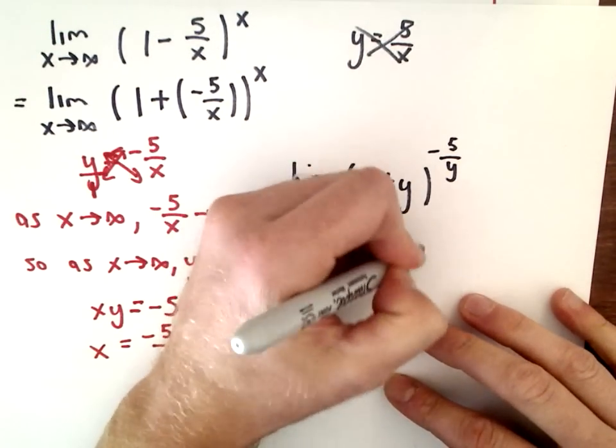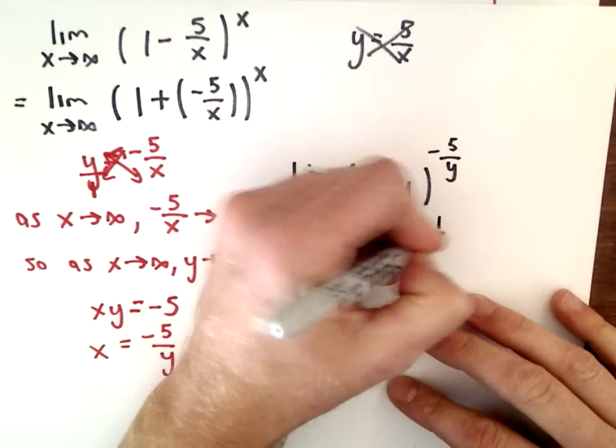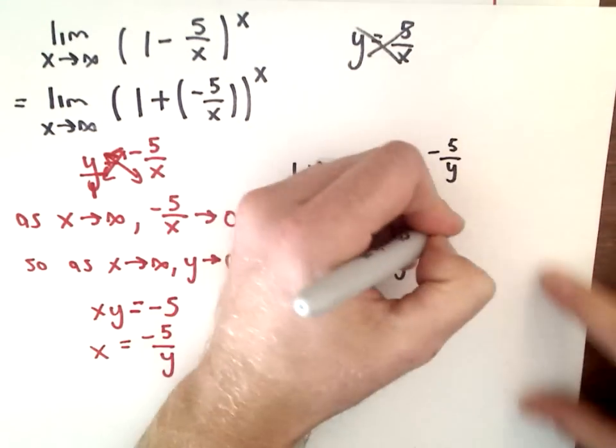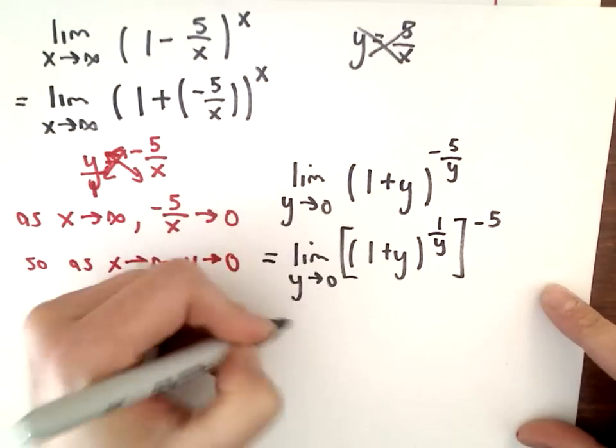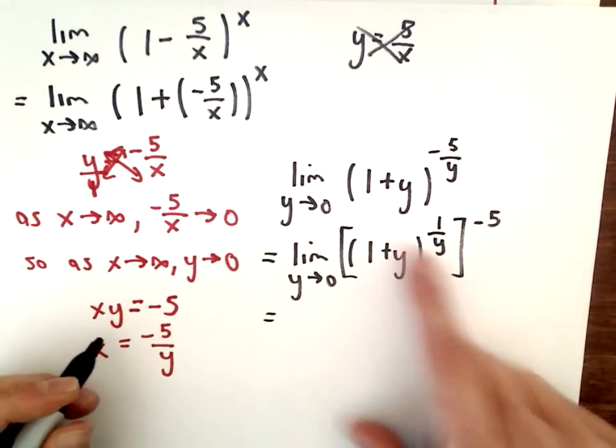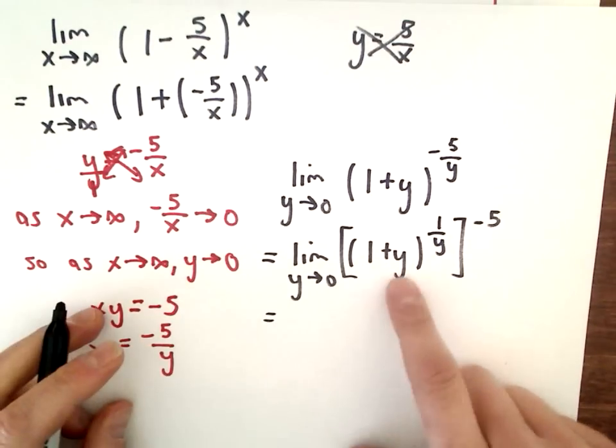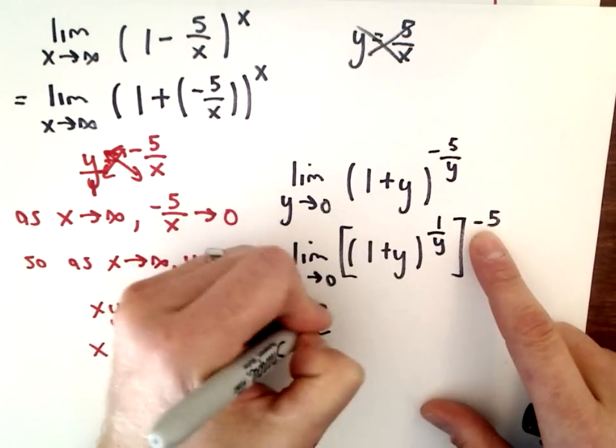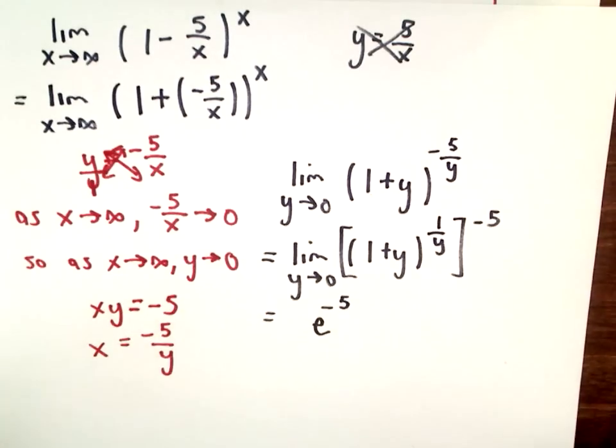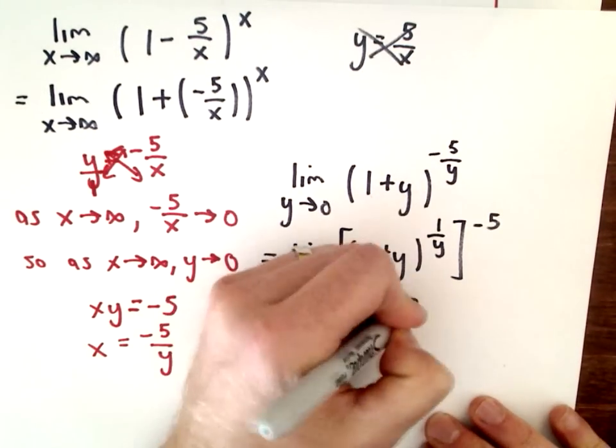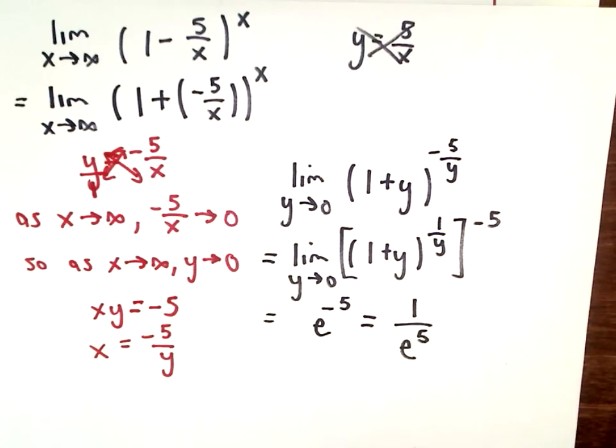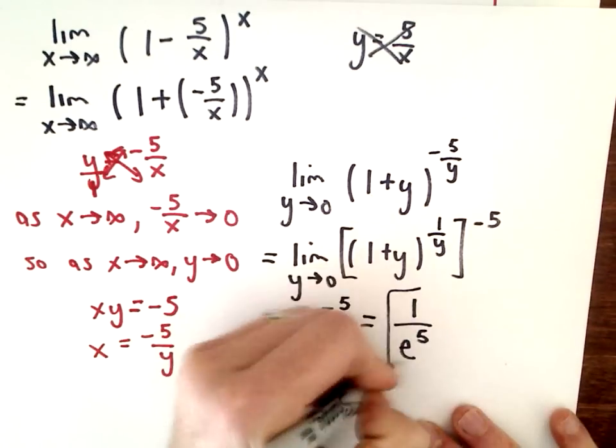We've got 1 plus y, exact same thing as before. I want 1/y, so there it is. Where's the negative 5? Let's put the negative 5 on the outside. This limit as y approaches 0 of (1+y)^(1/y) is just e raised to the -5th power. Sometimes people don't like negative exponents, so you can write that as 1/e^5. And that is it.